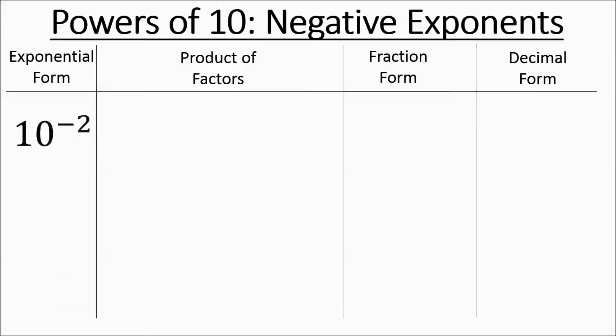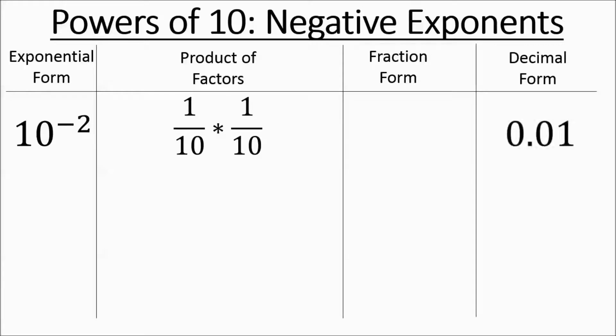So if you have 10 to the negative 2, you can think of it as 1 tenth times 1 tenth — which is 1 over 100 (10 times 10). As a decimal it's in the hundredths place, and as a fraction it's 1 over 100.